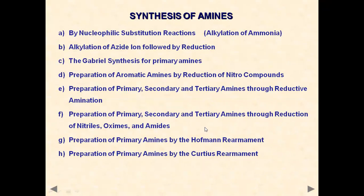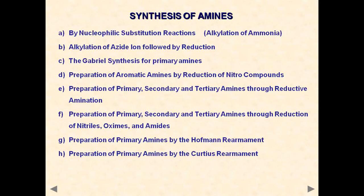In this lecture, synthesis of amines consists of: nucleophilic substitution reaction, alkylation of azide ion followed by reduction, Gabriel synthesis of primary amines, preparation of aromatic amines by reduction of nitro compounds, preparation of primary, secondary, and tertiary amines through reductive amination, preparation of amines through reduction of nitrile, oxime, and amides, and preparation of primary amines by Hofmann rearrangement.